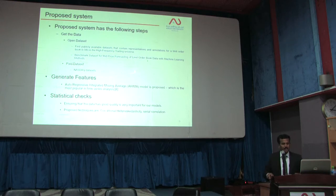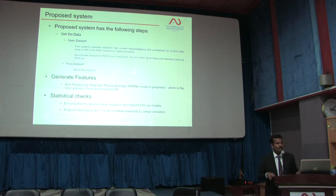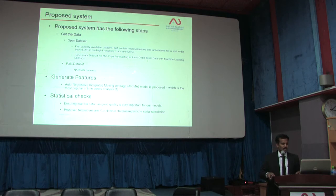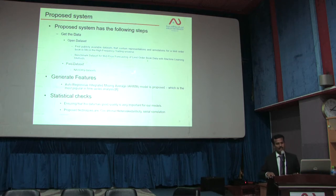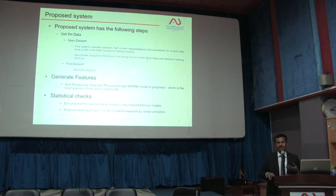The proposed system has the following steps. Step one: getting the data. No one is readily providing financial data currently; very few datasets are available. One of the freely available datasets is the first publicly available benchmarking dataset for mid-price forecasting of the LOB. Paid datasets such as the NASDAQ dataset are also available. After feature extraction, we are going to use the ARIMA model, which some researchers already use to generate features. A statistical check is also applied to ensure the data is high quality after pre-processing.